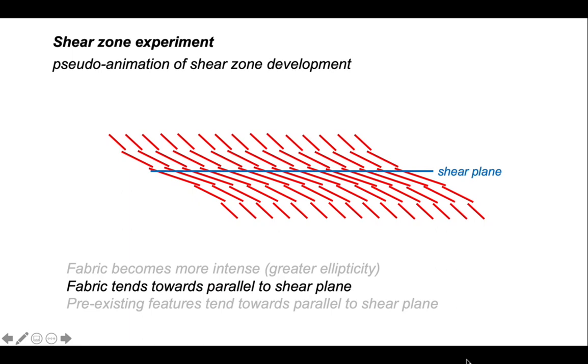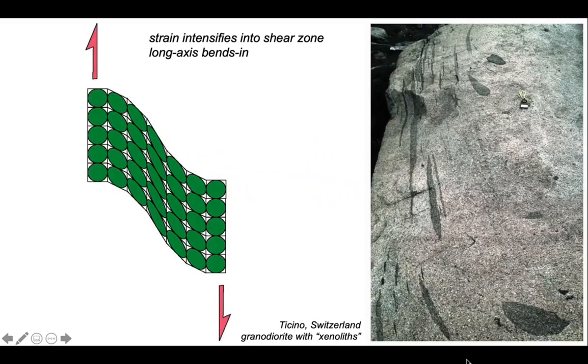Well, let's identify some of these features using natural outcrops. So, here's a very famous outcrop from Ticino in Switzerland of a granodiorite with xenoliths